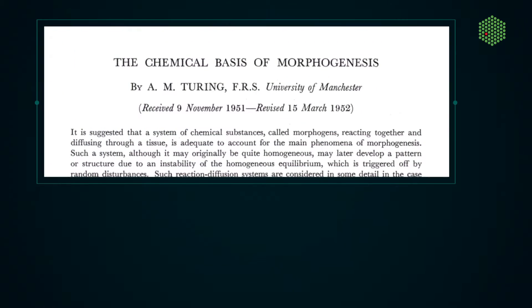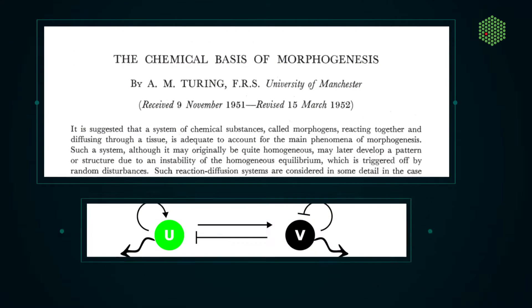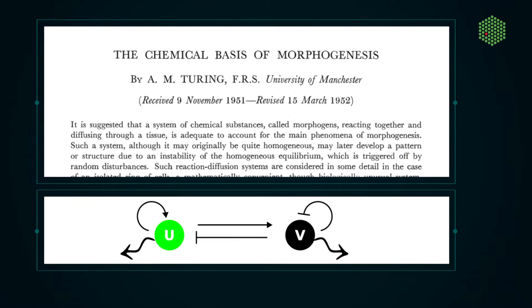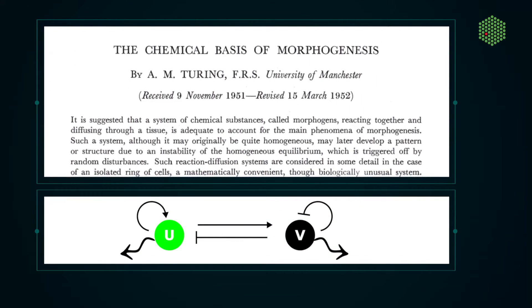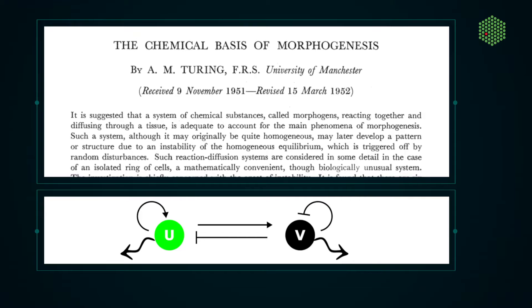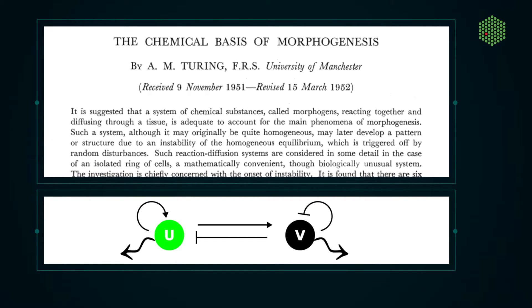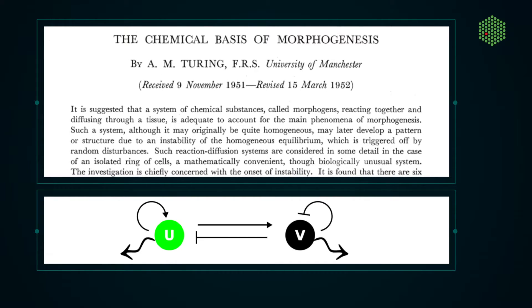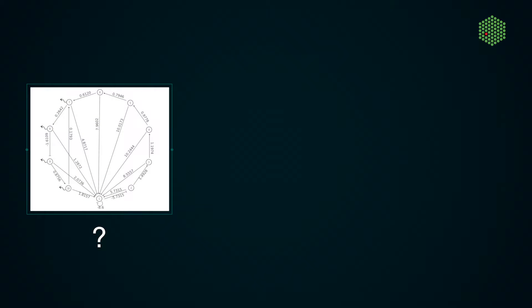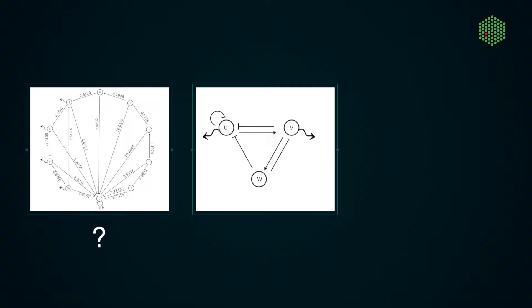In his famous paper, Turing proposed an abstract network of two molecules that had the key properties to produce patterns. The problem is that in reality it is almost impossible to find biochemical molecules with the properties needed to form such a system in its original form.